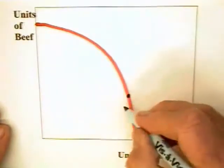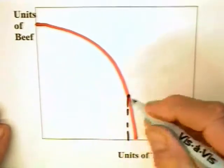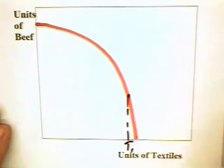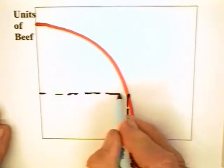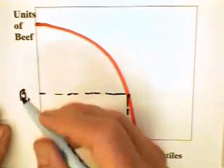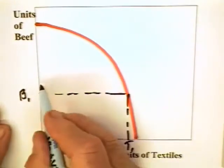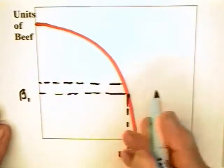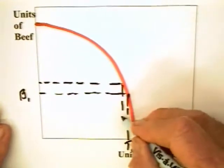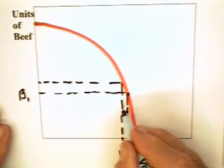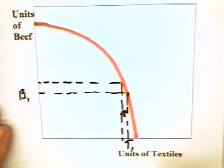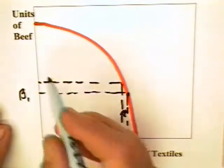That is, let's suppose that the United States is here producing T1 textiles and B1 beef. If it wants to produce one more beef beyond B1, this first beef requires that the United States give up that much in the way of textile production.